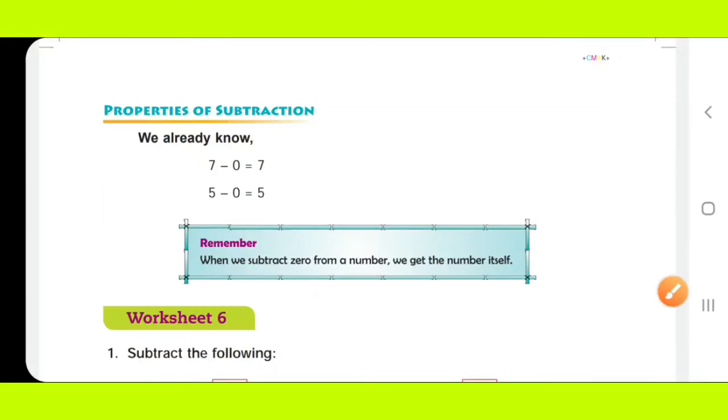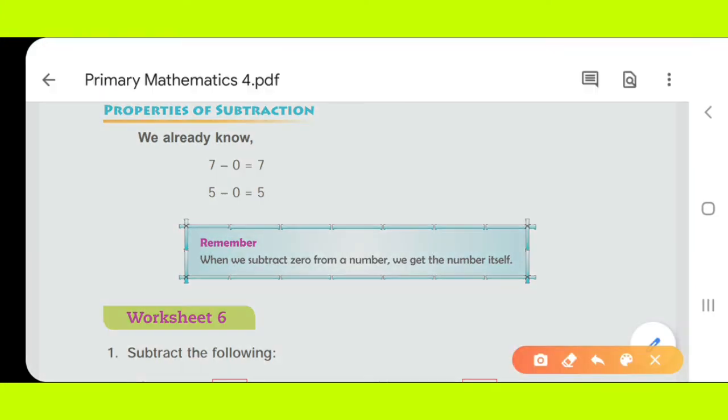Good morning students, today we are going to start with worksheet number 6 of unit 2. In this worksheet we will learn the most important property that when we subtract 0 from any number, we get the number itself.